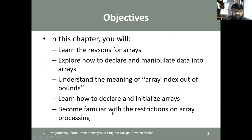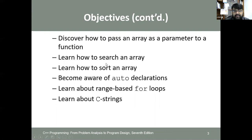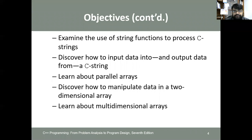We'll become familiar with the restrictions on array processing and how it differs from simple data types. We'll discover how to pass an array as a parameter to a function, how to search an array, and how to sort an array. We'll become aware of auto declarations, range-based for loops, C strings, string functions to process C strings, parallel arrays, two-dimensional arrays, and multi-dimensional arrays.